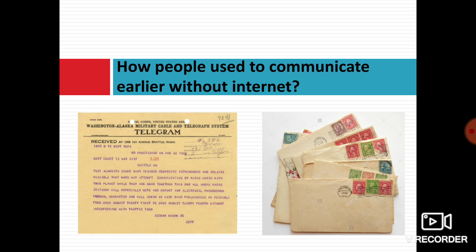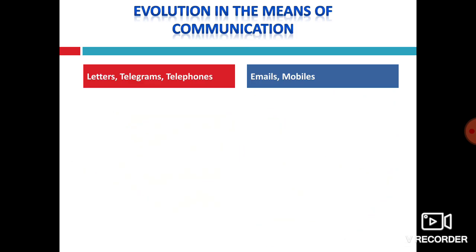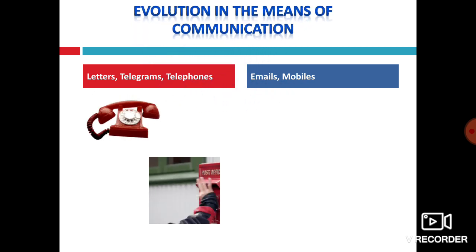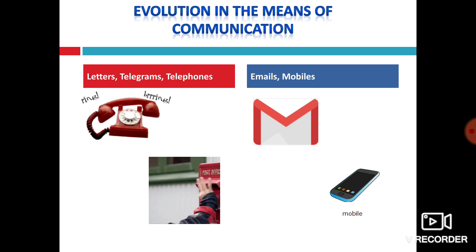Evolution in the means of communication. As I said, letters are replaced by emails. Earlier there were letters, telegrams, telephone. Now there are emails and mobiles. Telegrams, telephone, and postbox are now replaced by emails and mobiles. Earlier there were telephones in every house or offices, but now each and every person is having one or at least two mobiles with them. Earlier the letters used to be posted at the post address, now emails are sent through mobile, laptop, or computer.